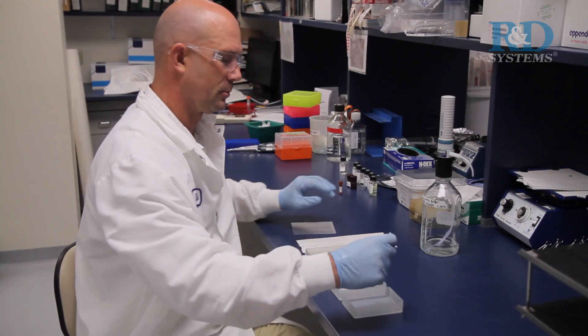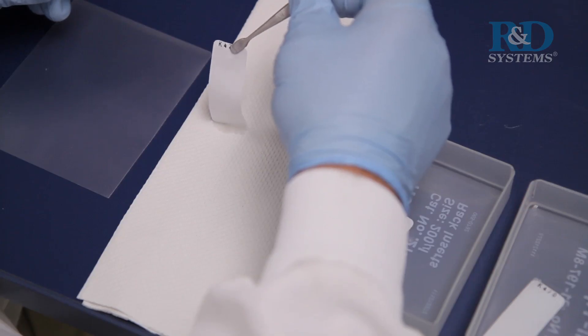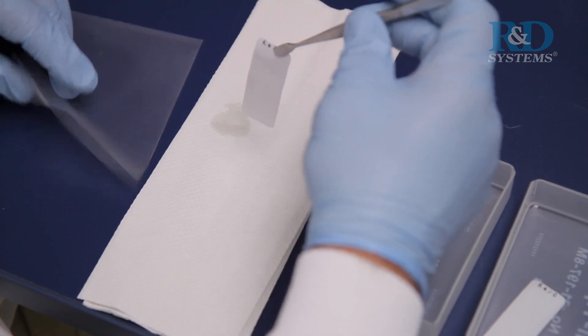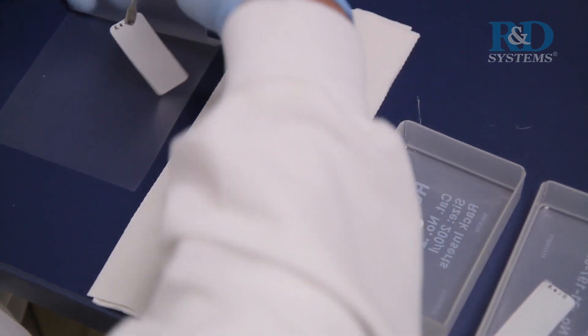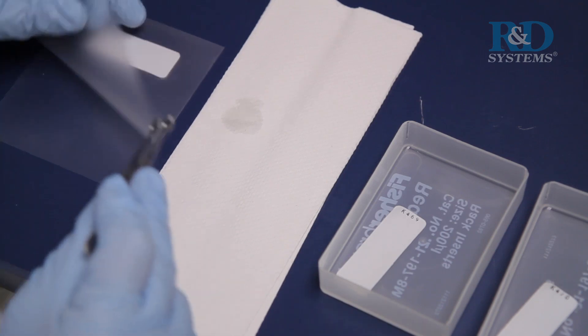Carefully remove each membrane from its wash container. Allow excess buffer to drain from the membrane by blotting the lower edge onto absorbent paper. Place each membrane on a plastic sheet protector with the identification number facing up.